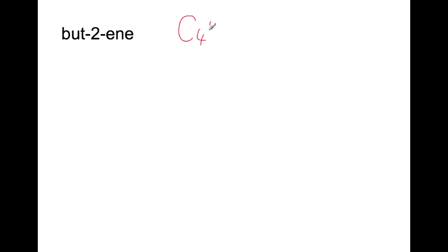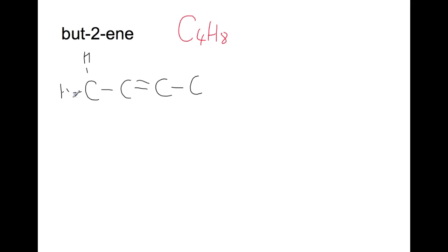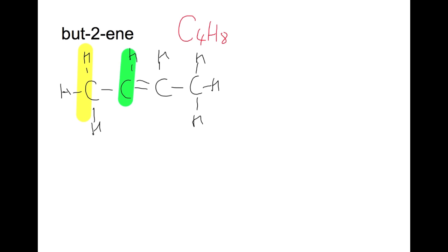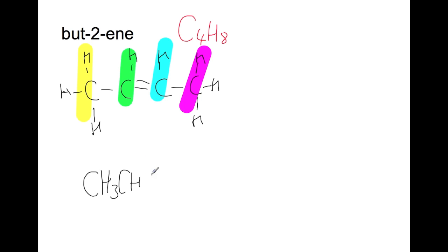We can also do this for alkenes. Butene is also C4H8, but as an isomer of cyclobutane it has a different structure. We start with four carbons, with a double bond between carbons two and three, then fill in the hydrogens so each carbon has four bonds. We then look at each section in turn to write the shortened structural formula.